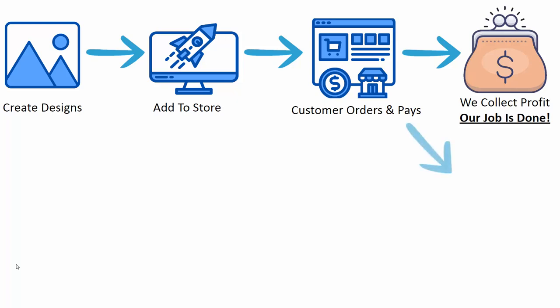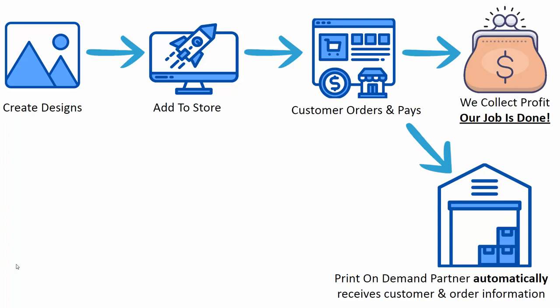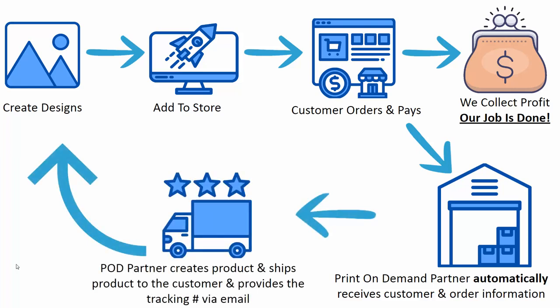At the same time, your print on demand partner will automatically receive the customer and order information — what they ordered, how many, what color, what size, what customization, whether they put a name on it, and the shipping information. All of that gets sent directly to your print on demand partner. You don't need to pick up the phone or copy and paste anything — this all happens automatically. The partner creates the product, ships it to the customer, and even provides tracking information via email on your behalf.